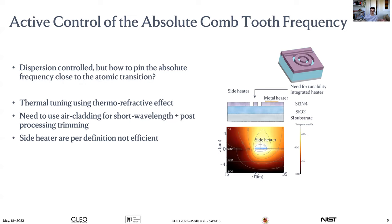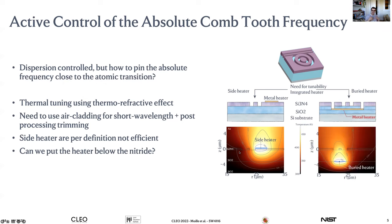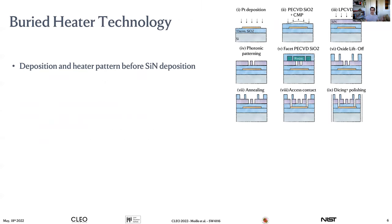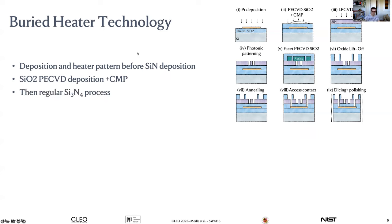Side heaters can be efficient because of thermal isolation via trenches. But we explored putting the heater directly under the ring for much higher efficiency. At NIST, we developed a buried heater approach: we deposit the heater and embed it in silicon dioxide before the silicon nitride deposition, then deposit silicon dioxide, planarize it, and deposit the silicon nitride proceeding with the regular silicon nitride process.